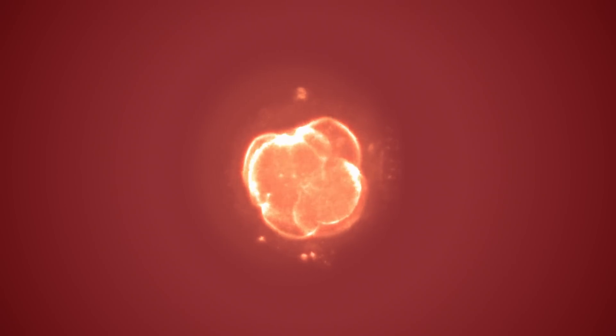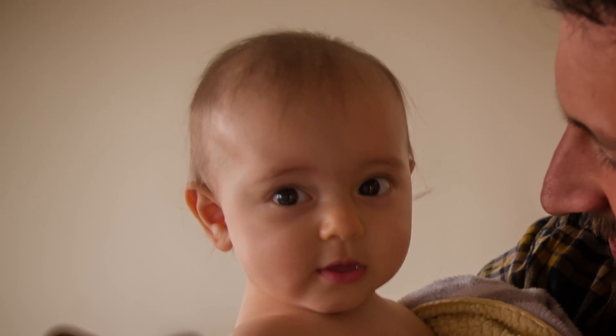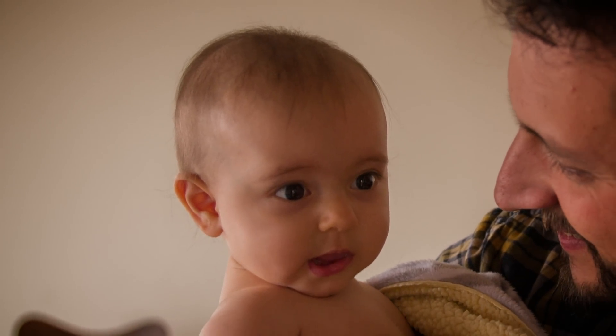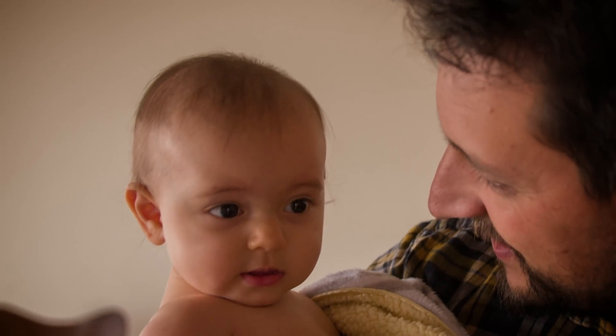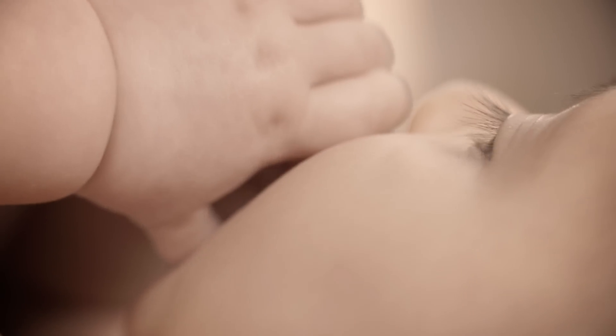But it takes nature a lot of trial and error to go from this to this. Only a few embryos, about one in three, have a genetic makeup that's good enough to let them grow into a baby. Scientists don't know why, but we humans are some of the least fertile mammals around.